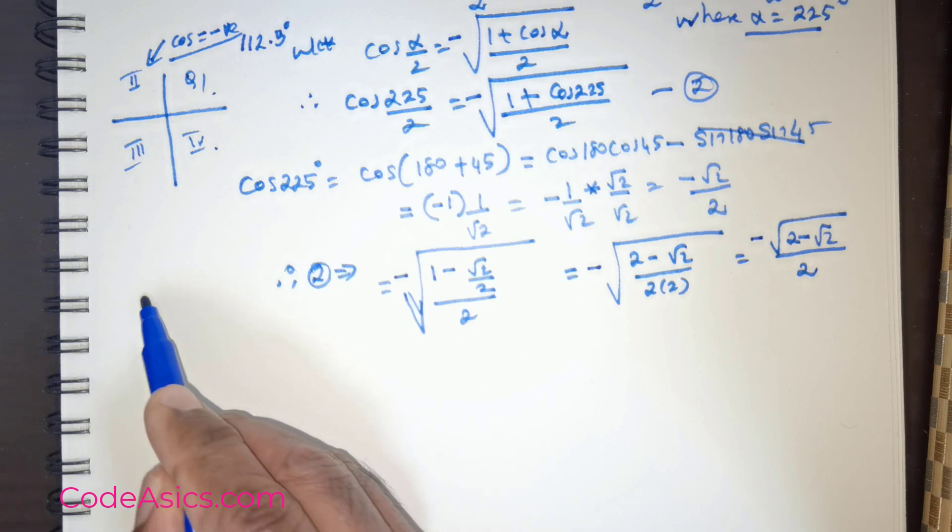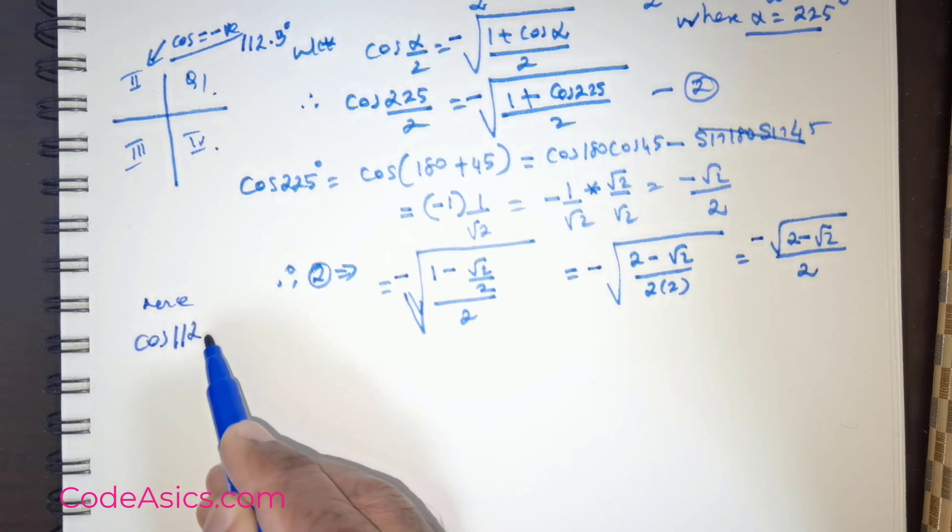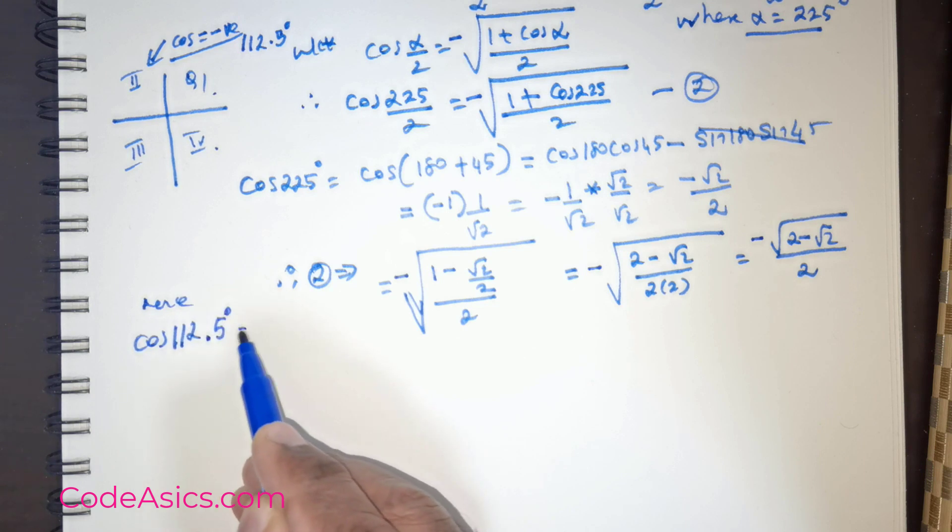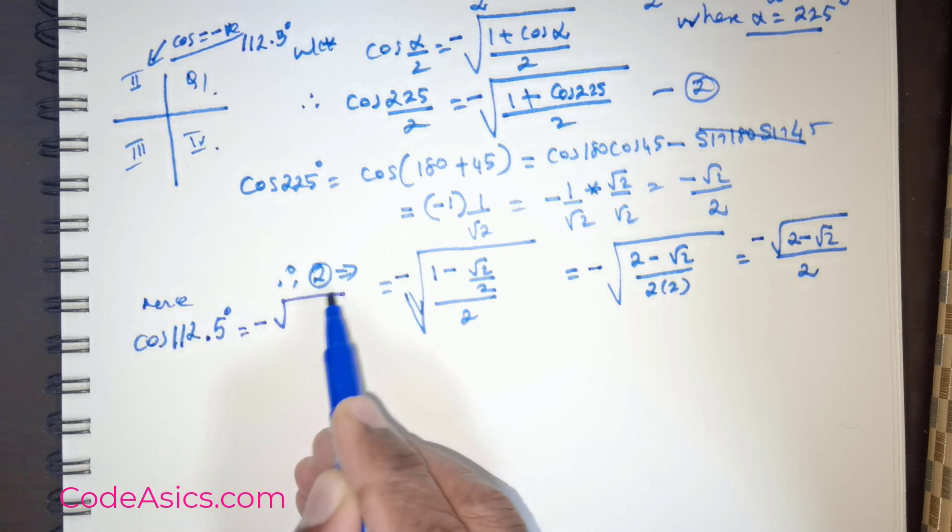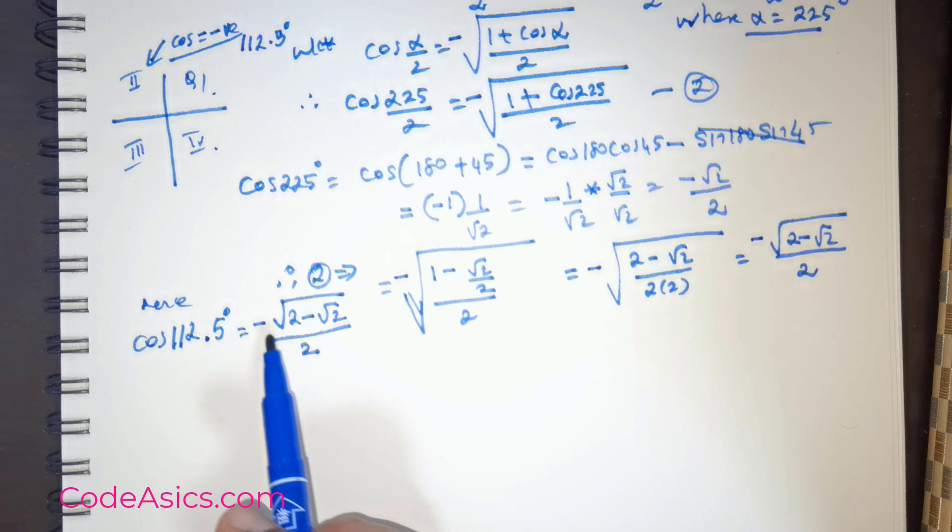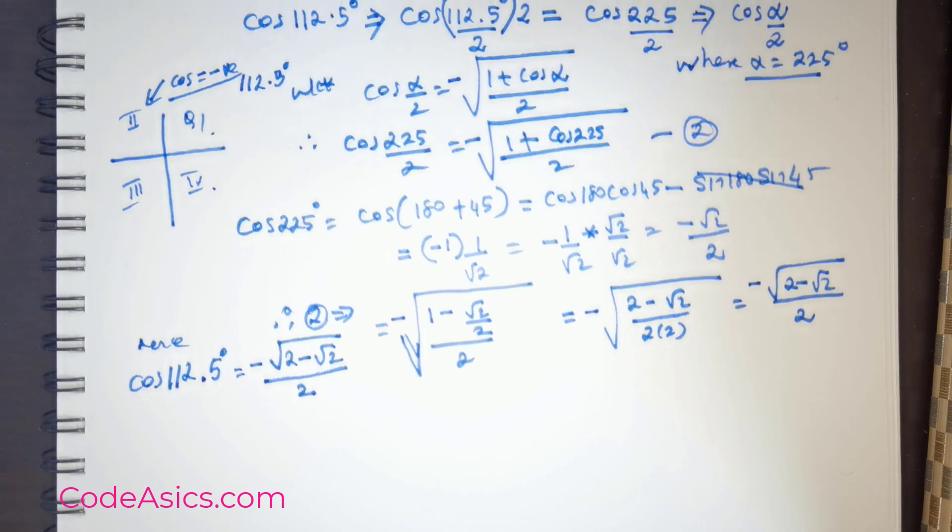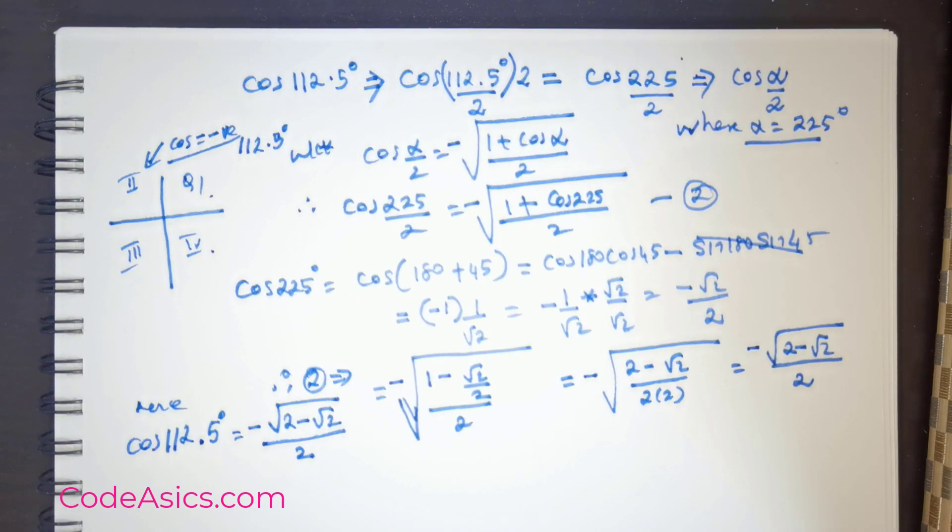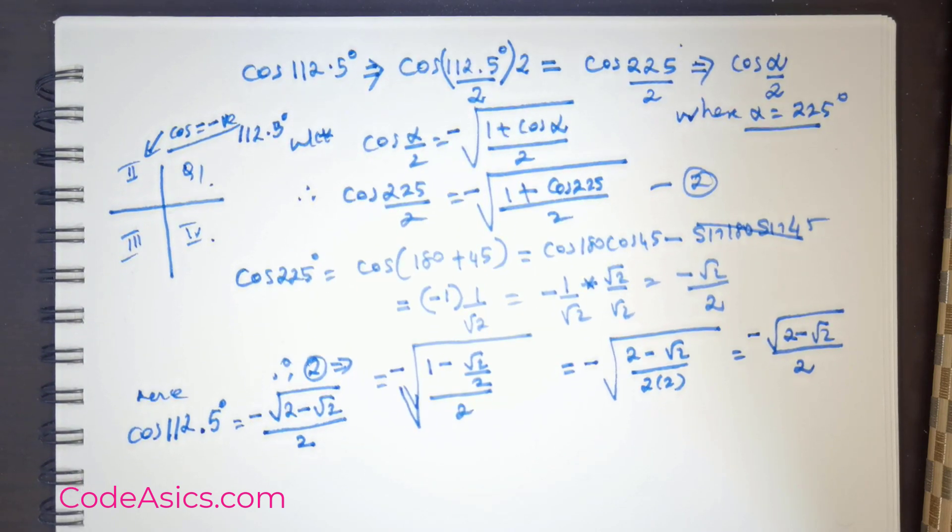Hence, cos 112.5 degrees equals negative square root of 2 minus root 2 divided by 2. This is the solution, and it is only valid when you place a negative sign. Don't forget the negative sign. Having mentioned that, this is a lovely question to experience half-angle trigonometry.